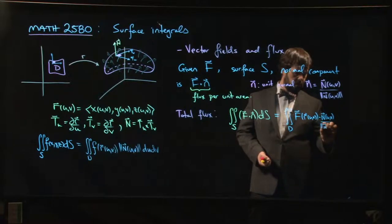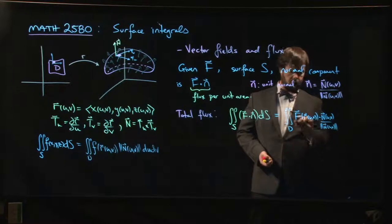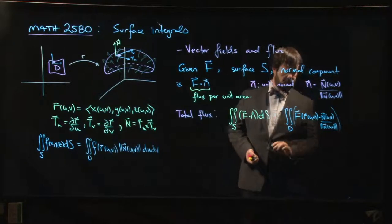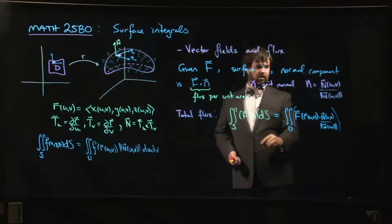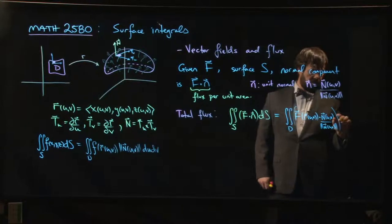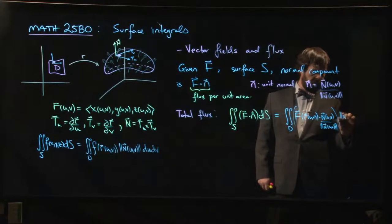We have that, but then we have this ds, and we know that ds once we parameterize is the magnitude of the normal times du dv.